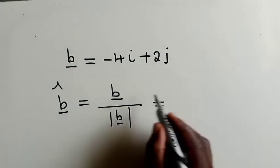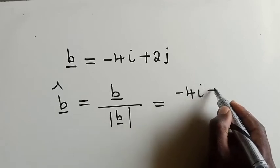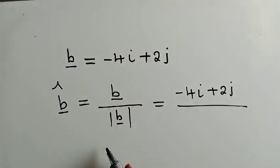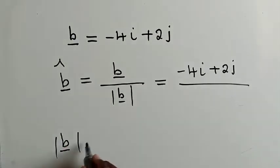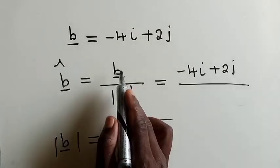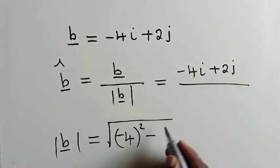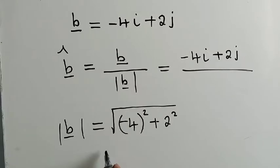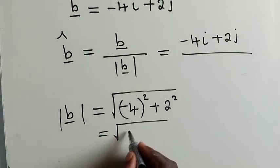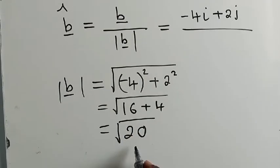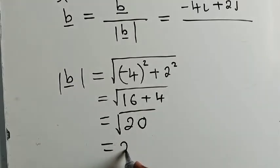So we can write vector B here is negative 4i plus 2j over the modulus, or the magnitude of B. The magnitude of vector B here can be found by using this method. So we can write, our i is negative 4, so you see negative 4 squared plus 2 squared. You solve, you find that we have 16 right here plus 4, which is equal to 20, root of 20. And the root of 20 can be written as 2 multiplied by square root of 5.